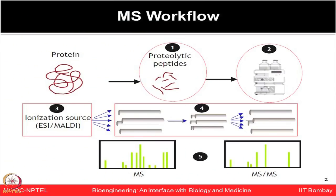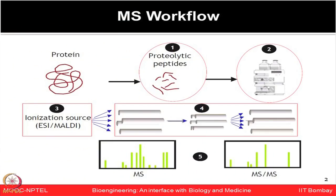These peptides can be further separated based on liquid chromatography-based methods. The proteins in solution form are ionized and moved inside the mass spectrometer. First, an ionization source is used to ionize these molecules, then they are separated by mass-to-charge ratio using different mass analyzers. You can use one mass analyzer or two mass analyzers, allowing either MS or MS/MS-based analysis.